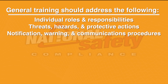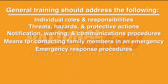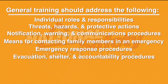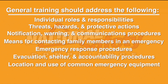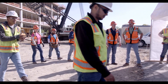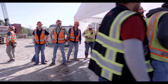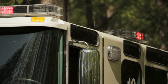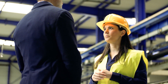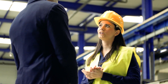General training should also address means for contacting family members in an emergency, emergency response procedures, evacuation, shelter, and accountability procedures, location and use of common emergency equipment, and emergency shutdown procedures. Once training has been provided, it is a good idea to hold practice drills as often as necessary to keep everyone prepared. Include outside resources such as fire and police departments whenever possible. After each drill, evaluate the effectiveness of the drill, identify strengths and weaknesses, and make improvements.